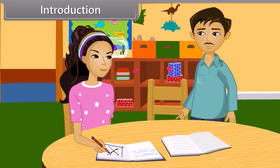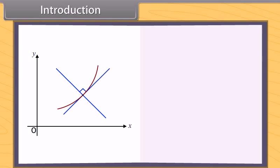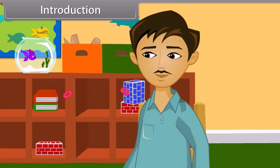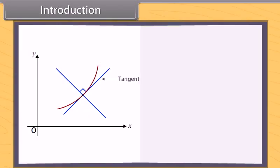Show me. So, what according to you is a tangent? This is tangent. Am I right, Dad? No, you are not. This is tangent and this is normal. The tangent is a straight line which just touches the curve at a given point. The normal is a straight line which is perpendicular to the tangent.